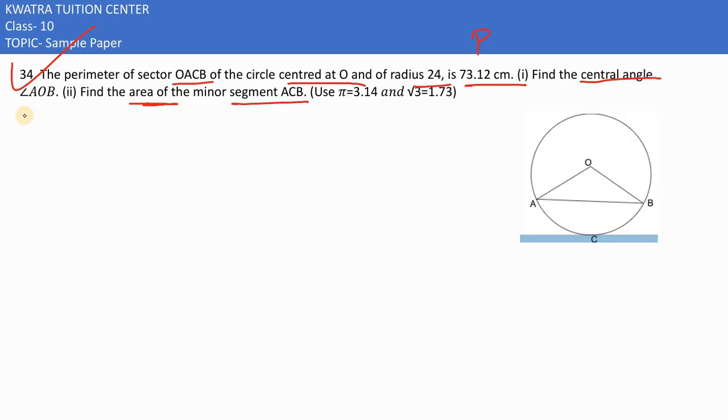Now if we find out this first part, we have to find the central angle theta first. First of all, the length of arc plus the radius plus the radius would be the perimeter of the sector.